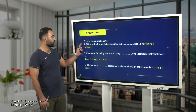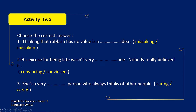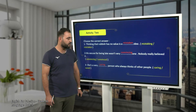Activity two: choose the correct answer. Take two minutes, read these sentences, and circle the correct answer. Let's start with number one: thinking that rubbish has no value is a mistaken idea — it's mistaken. Number two: his excuse for being late wasn't very convincing — nobody really believed it, so it wasn't convincing. Number three: she is a very caring person who always thinks of other people.